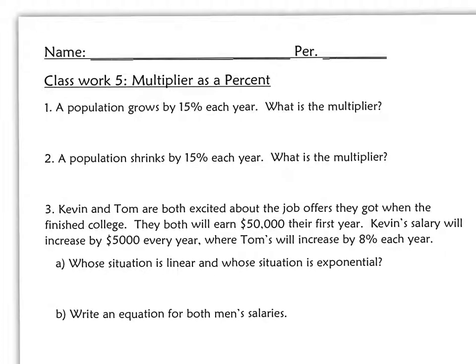So you always want to add 100 to your percentage growth. In this particular case, we would have something like 100 plus 15, and then we turn it into a decimal by dividing by 100. So it would be 1.15.